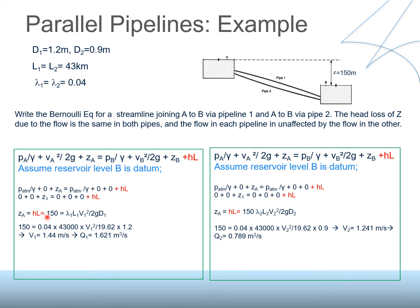Minor losses are neglected here because both pipes are 43 km long — including entry and exit losses would make little difference. The friction head loss formula is f·L·V²/(2g·d). Setting head loss = 150 m and substituting all known values, we solve for velocity in pipe 1: V1 = 1.44 m/s. The discharge is Q1 = A·V = 1.621 m³/s.